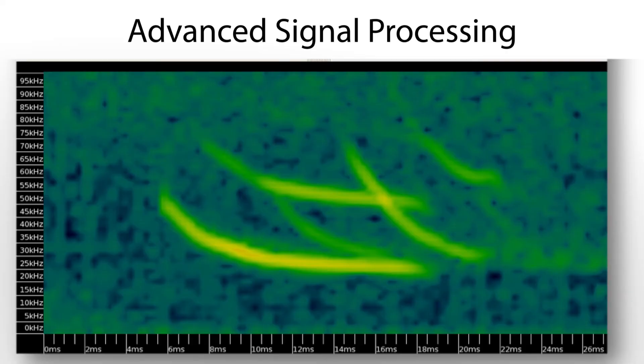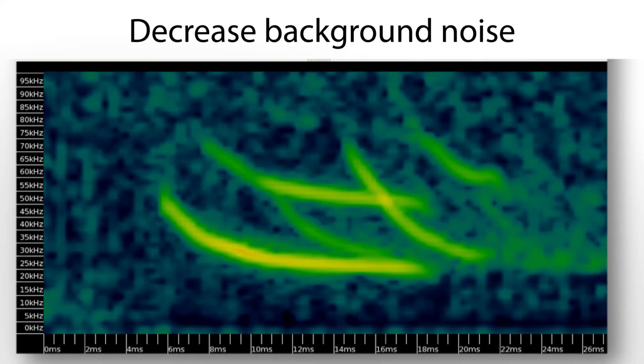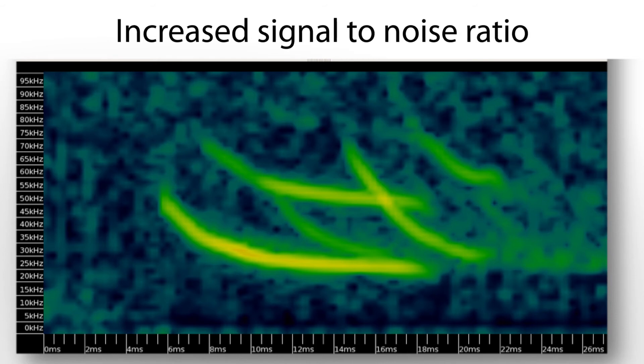The first thing the processing does is decrease the background noise. This enables Kaleidoscope to pick out much fainter signals than a native zero crossing recorder would be able to detect.